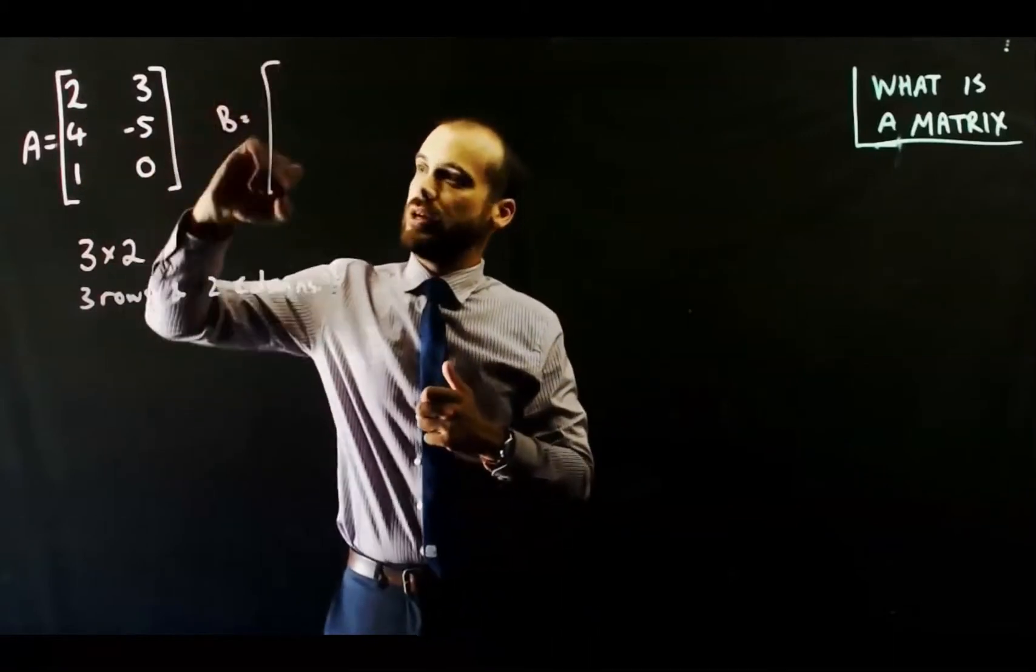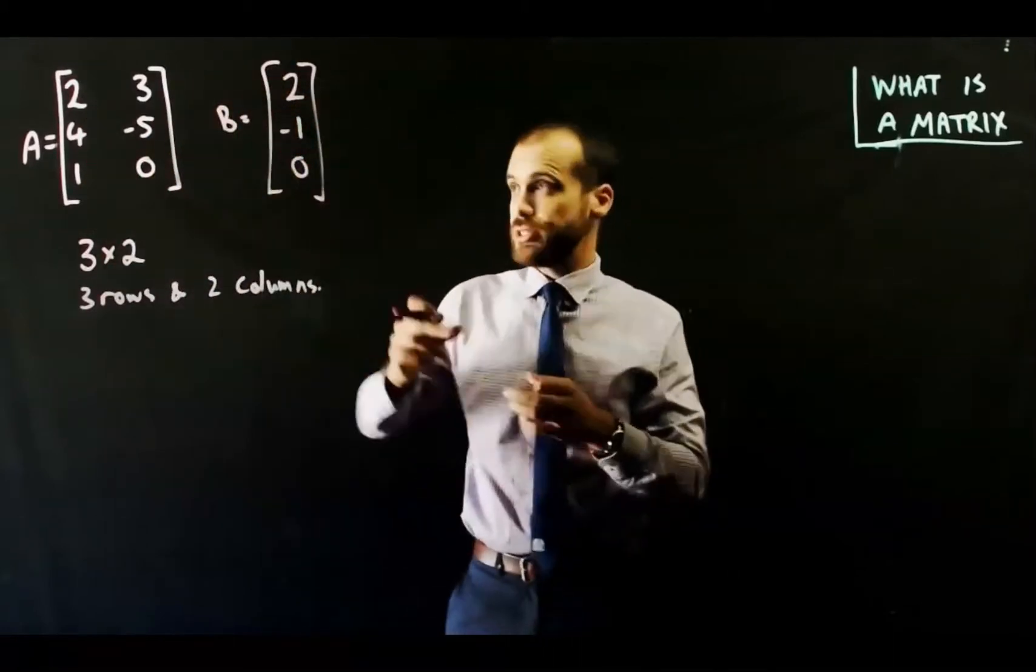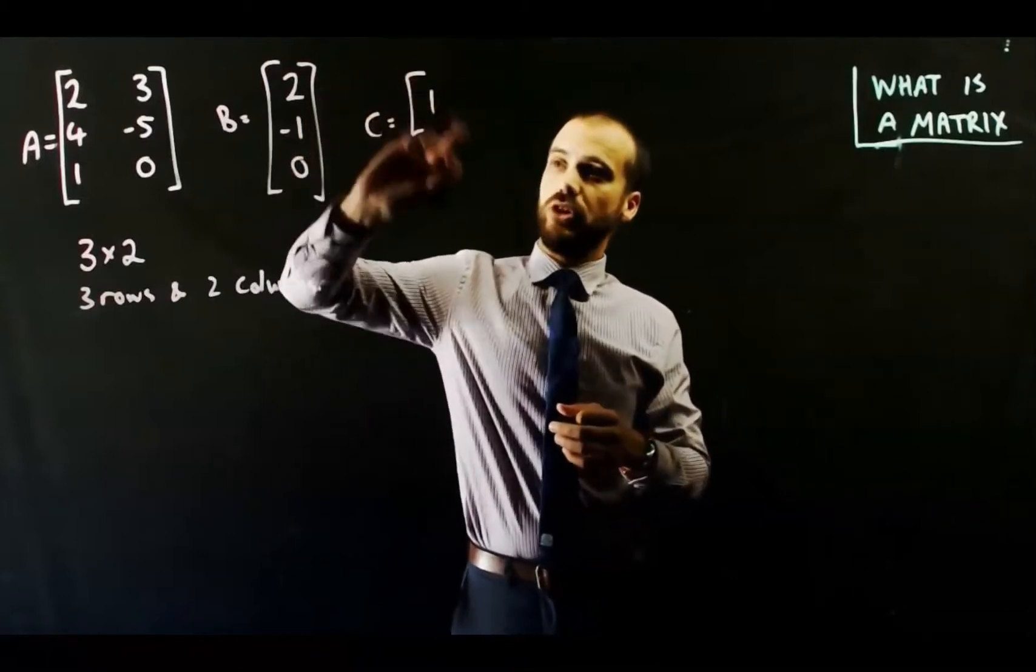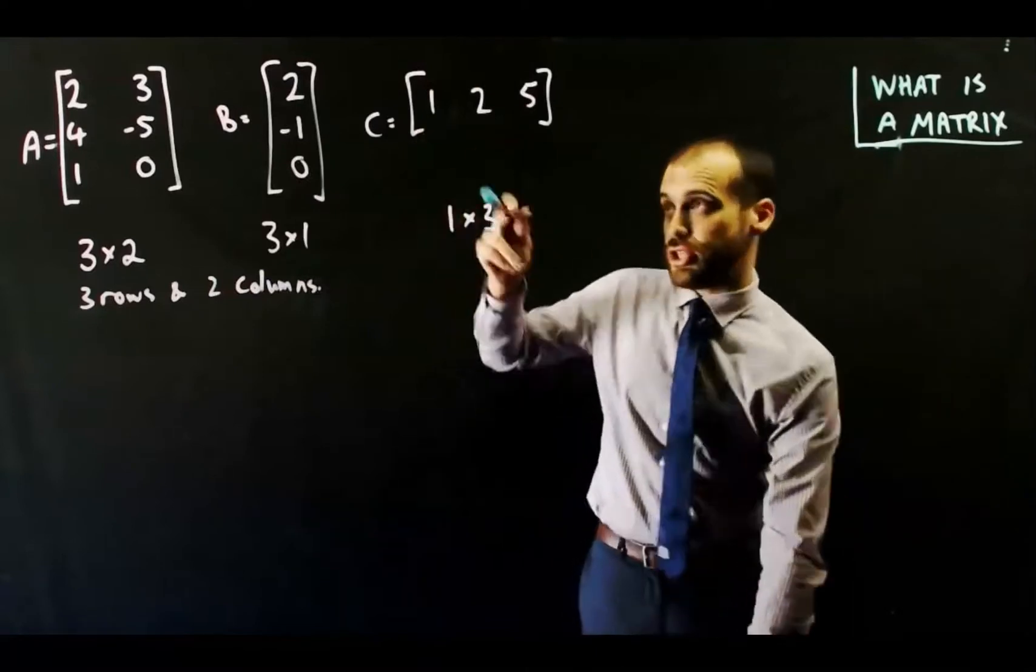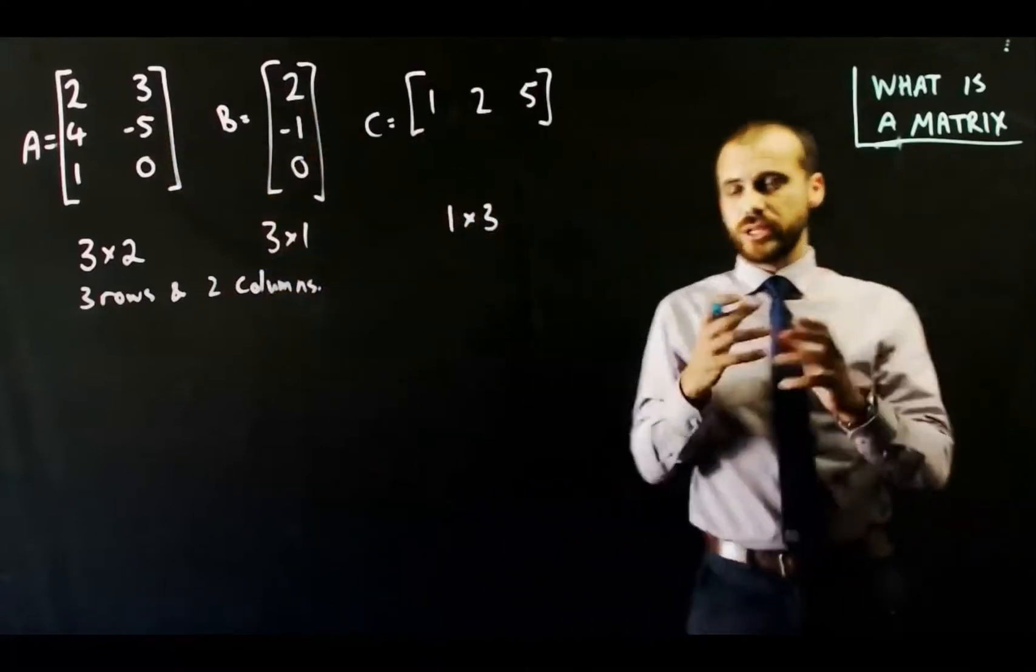We can draw up another matrix here called a column matrix. That's got 3 rows and 1 column. And we've got a row matrix here, 1 row, 3 columns. So we'll just call that 3 by 1 and a 1 by 3.